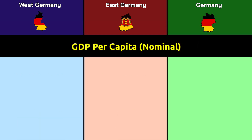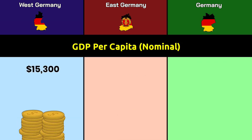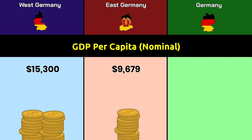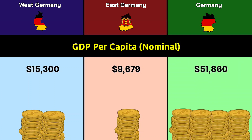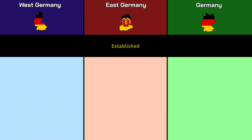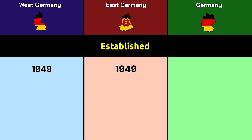GDP per capita: West Germany had 15,300 dollars, East Germany had 9,679 dollars, and modern Germany has 51,860 dollars. Established: both West Germany and East Germany were established in 1949, while the Federal Republic of Germany was established in 1990.